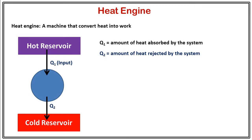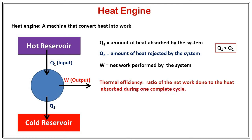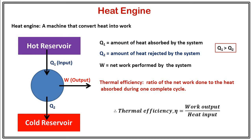At the same time the amount of heat rejected by the system is Q2, and this heat Q2 goes to the cold reservoir. So the system is taking heat from the hot reservoir and rejecting heat to the cold reservoir. During this there is a net work performed by the system, let's say that is W. So here input is Q1 and output is W. The thermal efficiency is the ratio of net work done to the heat absorbed during one cycle, that is output by input. Hence thermal efficiency Eta equals work output divided by heat input.